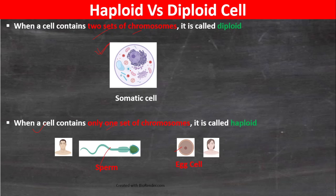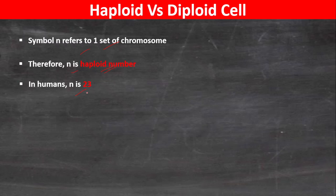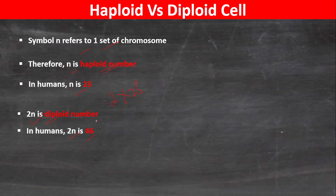Examples of haploid cells include male sperm cells. The symbol n is used to refer to one set of chromosomes, so n is the haploid number. In humans, n is 23, and therefore 2n is the diploid number. In humans, 2n equals 46, because 2 times 23 is 46.